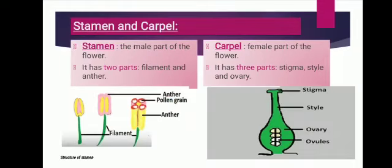Inside the petals are stamens. Stamens are the male part of the flower and have two parts: filament and anther. The stamen is made up of a long filament with an anther at the top, and the anther contains pollen grains. Carpel is the female part of the flower, also known as pistil. It has three parts: stigma, style and ovary. Inside the ovary, ovules are present.